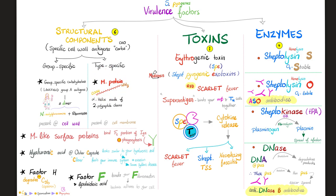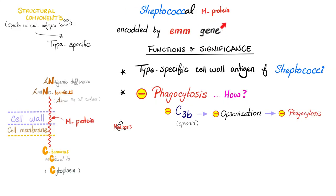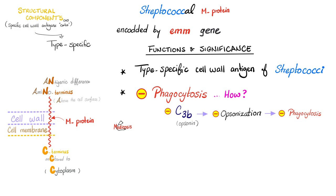Let's talk more about the M-protein, a type-specific structural component of strep pyogenes. Genes code for proteins — the gene name is EMM. Structure: it has a C-terminus (COOH) and an N-terminus (NH2). The C-terminus is anchored to the cytoplasm of the bacteria, and the protein extends upward until it hangs outside above the cell surface by its amino-terminus. This amino-terminus is antigenic — the antigenic difference of the N-terminus is why one type of streptococcus differs from another.